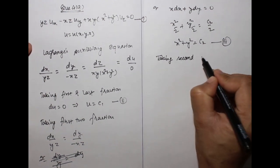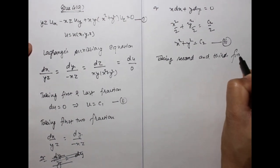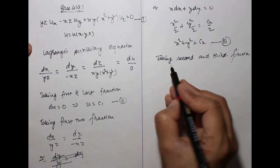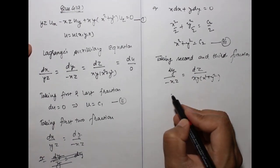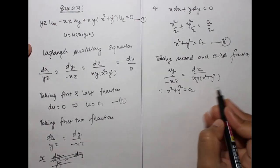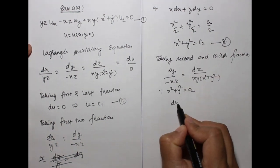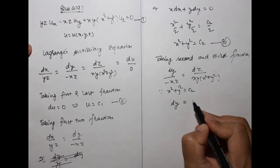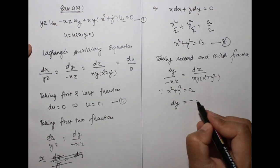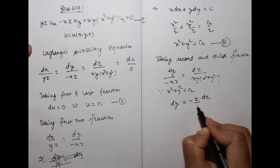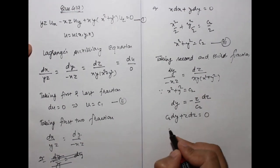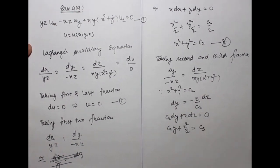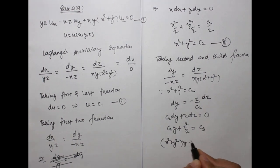Taking the second and third fractions: dy upon minus XZ equals dz upon XY(X²+Y²). Since x²+y² = c2 from equation 3, we substitute to get: c2 dy + Z dz = 0. Integrating gives c2·y + z²/2 = c3. Putting the value of c2, we get (x²+y²)·y + z²/2 = c3. This is equation 4.